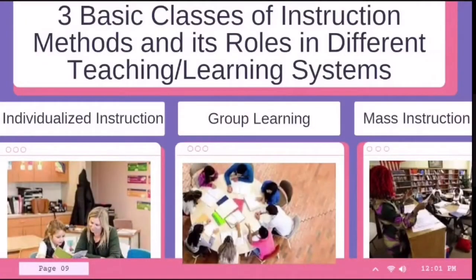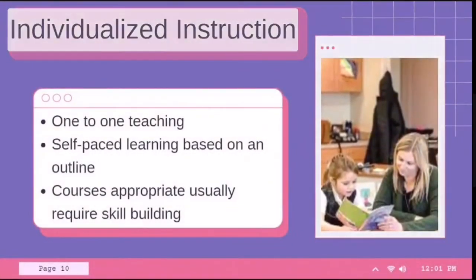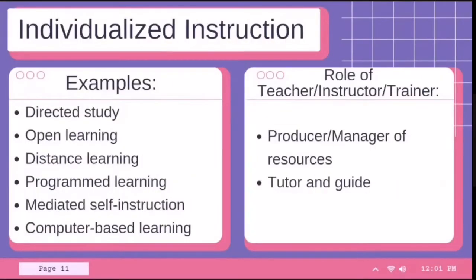We also have the three basic classes of instruction methods and their roles in different teaching or learning systems: individualized instruction, group learning, and mass instruction. Individualized instruction is a method in which there is one-to-one teaching and self-paced learning based on an outline of progressive goals leading to course or curriculum objectives. Courses appropriate for individualized instruction are usually those that require skill building. Examples include directed study, open learning, distance learning, programmed learning, mediated self-instruction, and computer-based learning. The role of the teacher is producer or manager of resources, as well as tutor and guide.